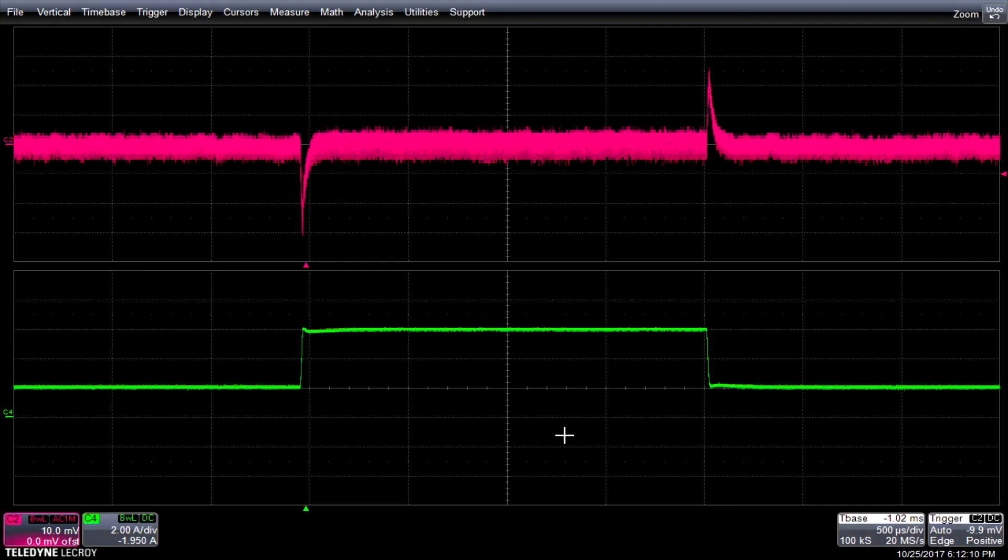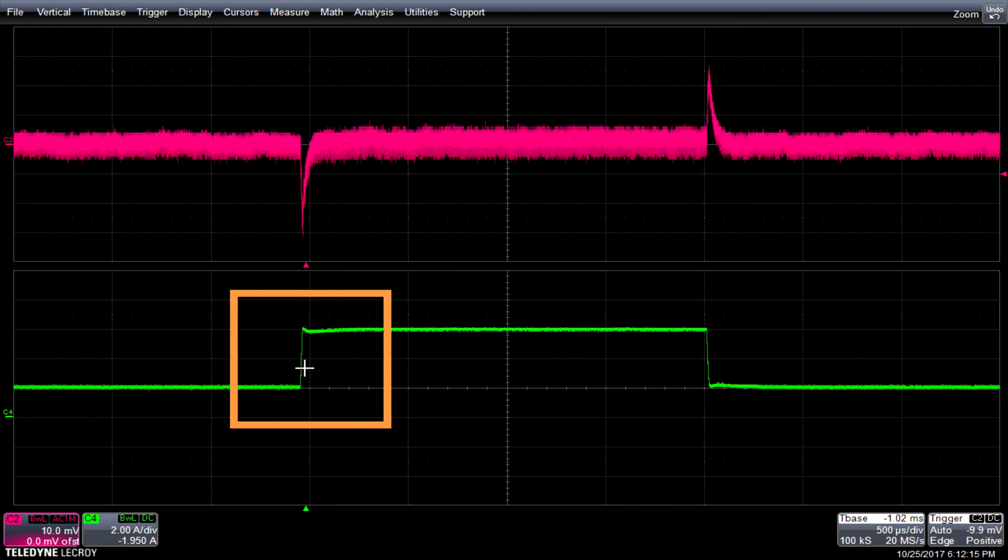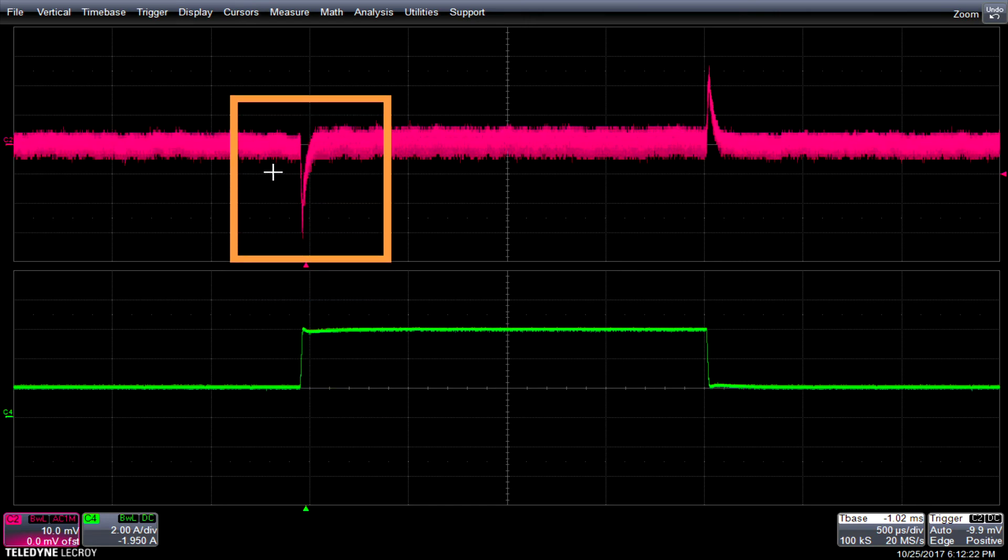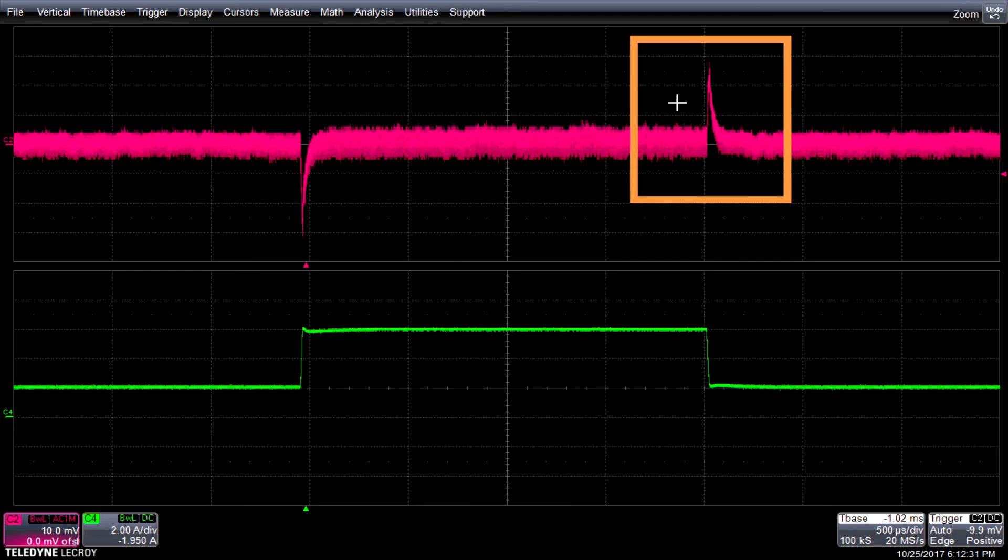So what we see on the oscilloscope, the green waveform is the load step, so it's a 2 amp to a 6 amp load step, so 4 amp delta. On the upper waveform, the pink waveform, we see the transient response. So we see the exceptional transient response when the load step is applied and then additionally when the load step is released.